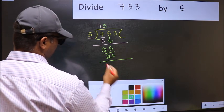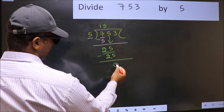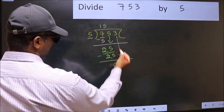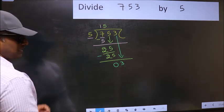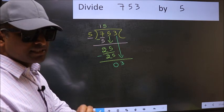Now you should subtract. 25 minus 25, 0. After this, bring down the beside number. So 3 down. After this step, the mistake happens. And the mistake is this.